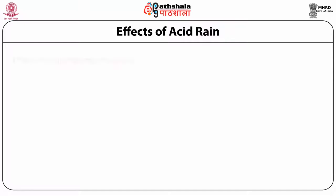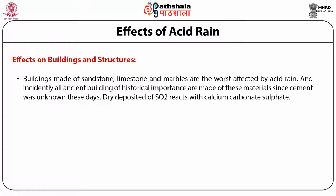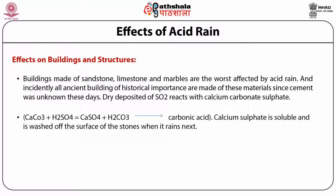Acid rain also affects buildings and structures. Buildings made of sandstone, limestone and marble are the worst affected. All ancient buildings of historical importance are made of these materials, since cement was unknown in those days. Dry deposited sulfur dioxide reacts with calcium carbonate to form calcium sulfate, which is soluble and is washed out from the surface of the stone when it rains.